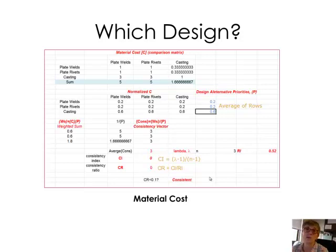Let's say that we have three different designs. This object that we're designing, we have three objects, three options for manufacturing. We can weld plates that consist of this component together, we can rivet them together, or we can actually pay to have a casting made.